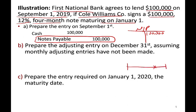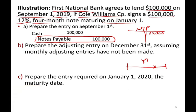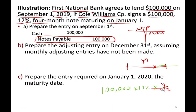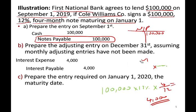We lend the money on September 1st and we pay it back January 1st. From September 1st through December 31st, we have to accrue the interest. That means we compute the interest expense for that period: $100,000 times 12% times 4/12 — because we're computing interest for 4 out of 12 months — which equals $4,000. On December 31st, we debit interest expense $4,000 and credit interest payable $4,000, creating an accrued liability of $4,000 in addition to the notes payable.